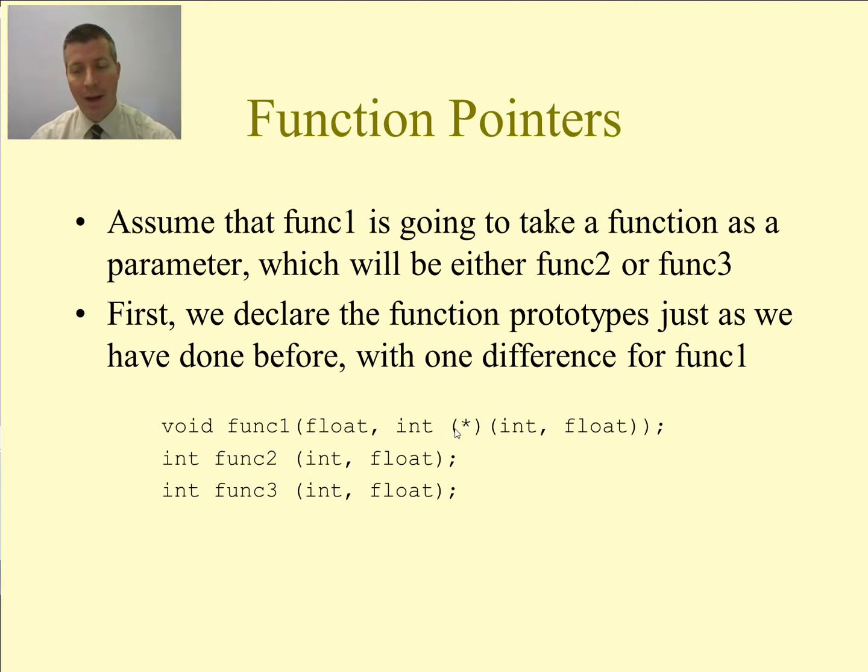This is going to be the function parameters for the function that I'm passing into this function. This is just the syntax of it. I put the parentheses around the star. So what this denotes here as the second parameter is this is a pointer to a function that returns an int and takes an int and a float. And this is the second parameter to the func1 function. The first parameter is a float variable. Now, so that means that any function that I want to pass in here as the second parameter to this function has to return an integer and take an integer and a float as parameters to the function.